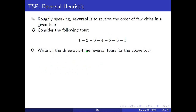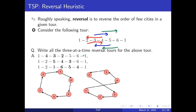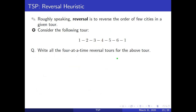Now let us write all the three-at-a-time reversals. You could have a reversal like this, or a reversal like this, or a reversal like this, or a reversal like this. So in total you will have three three-at-a-time reversals. These are those reversals — this is the reversal corresponding to the red reversal, this is the blue reversal, this is the green reversal. And for this reversal here is the graphical representation.